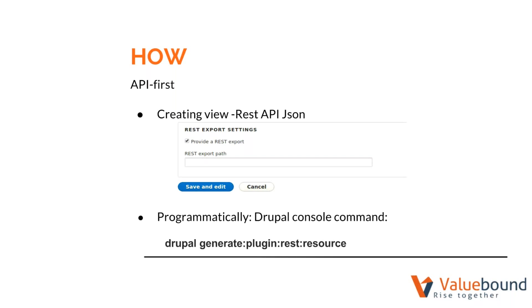In the case of views, the main thing to consider is there will be a checkbox for creating a REST export view, as I have pointed to in the snapshot. We also have to provide a URL path which is meant to be exported through the API.